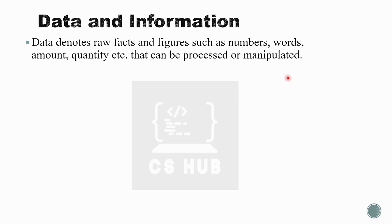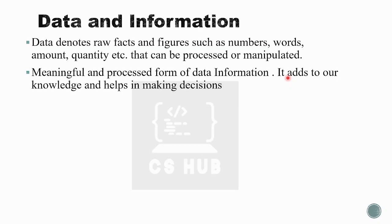Data is the first thing. When it comes to data, it is raw facts and figures — it is numbers or letters, it is values. We can process that data, we can manipulate that data. The meaningful and processed form of data is known as information.